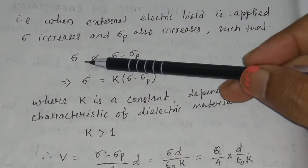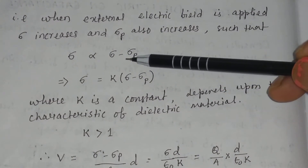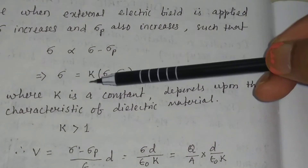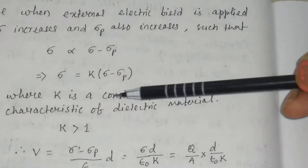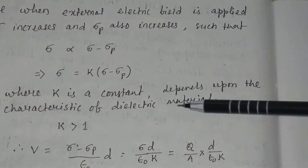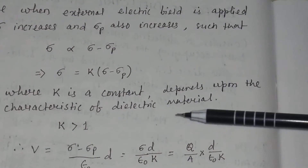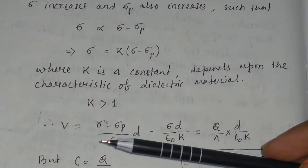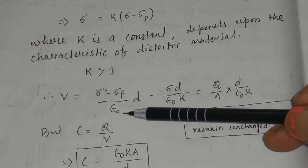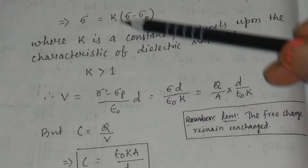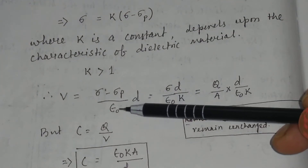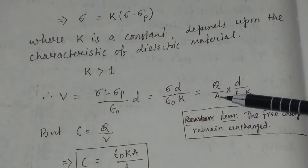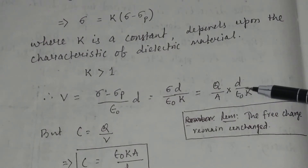This is very important. The surface charge density sigma equals k times sigma minus sigma p, where k is a constant that depends upon the characteristics of the dielectric material. k is always greater than 1. So the potential V equals sigma minus sigma p divided by epsilon 0 times d. But sigma minus sigma p equals sigma divided by k, so substituting gives V equal to sigma d divided by epsilon 0 k. Since sigma equals q divided by area A, V equals q d divided by A epsilon 0 k.